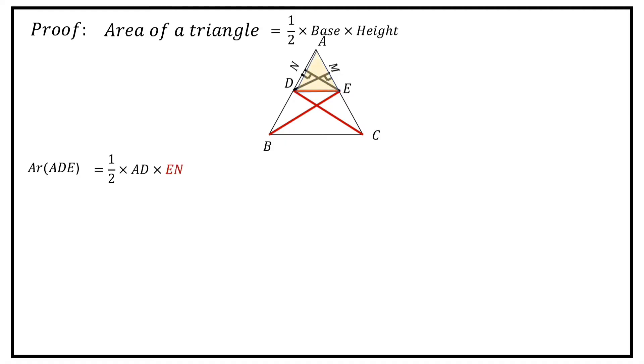Area of triangle ADE is equal to half into base AD into EN. Area of triangle BDE is equal to half into base BD into EN.